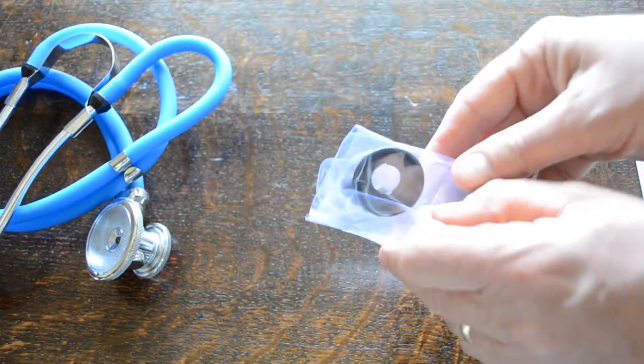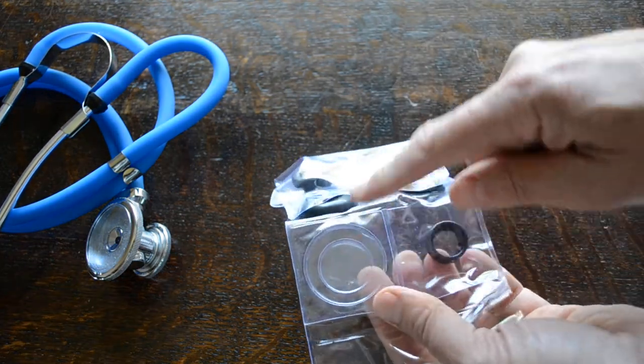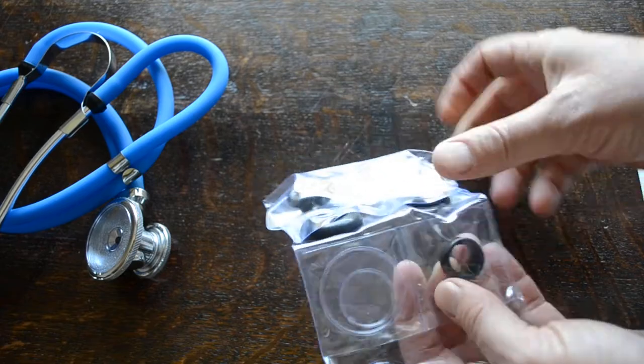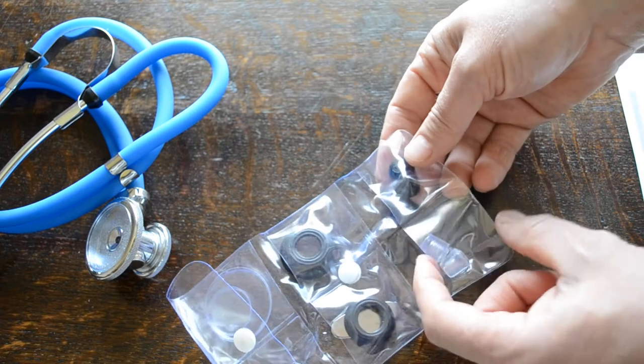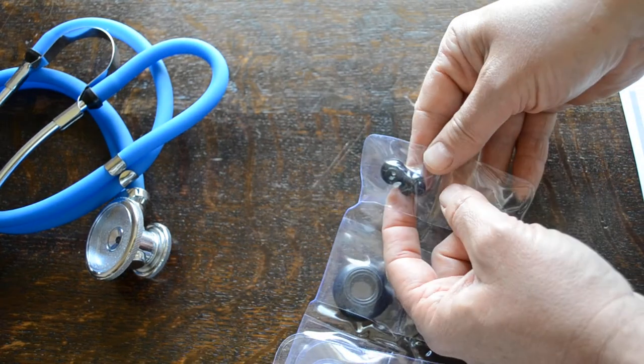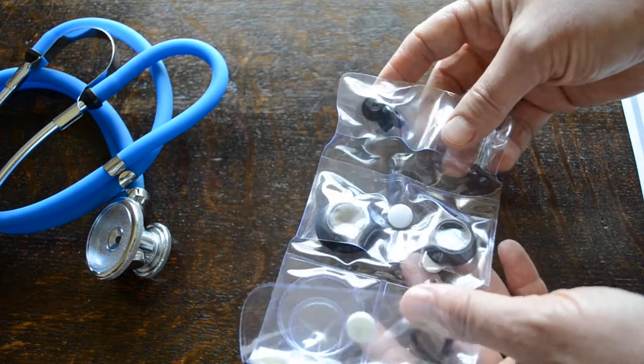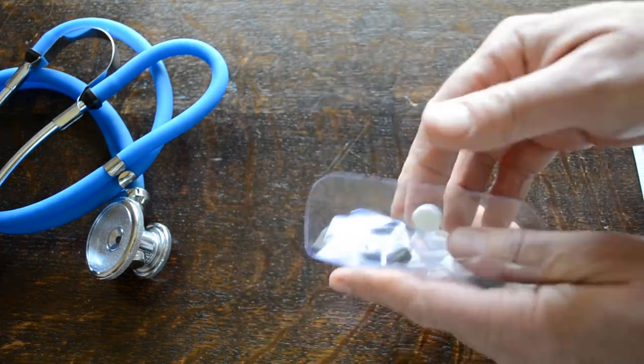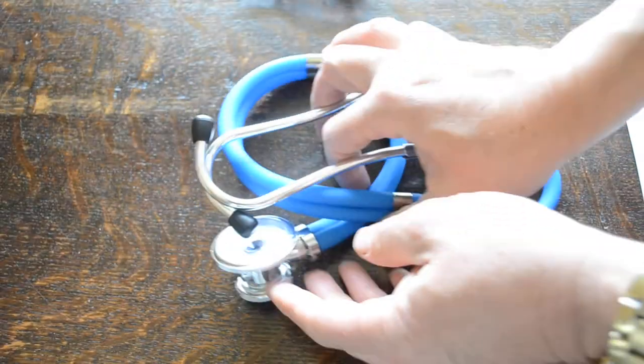I'll just show you the spares pack that comes with each of these blue units. You get two spare diaphragms, a neonate bell, paediatric bell, and an adult bell. A spare set of soft translucent ear tips and a spare set of button ear tips if you prefer those as well. So a very good quality pack of spares comes as standard when you buy the stethoscope.